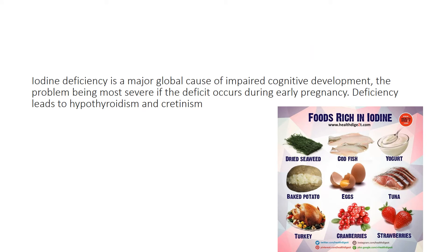Iodine deficiency is another global problem. It causes impaired cognitive development, with the most severe effects when the deficit occurs during early pregnancy. Deficiency leads to hypothyroidism and cretinism — affected individuals have characteristic features and intellectual and cognitive problems if not supplemented early with thyroxine. Foods rich in iodine include cod fish, dried seaweed, yogurt, baked potato, eggs, tuna, turkey, cranberries, and strawberries.